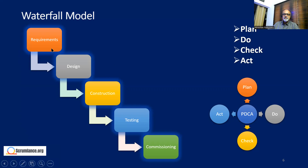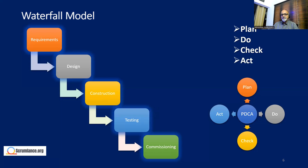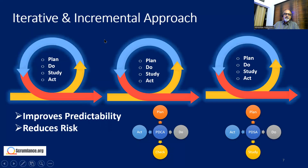A key problem with waterfall is the cost of fixing defects at different phases. A requirements defect fixed in the requirements phase costs $1; fixing the same defect in the design phase costs $10; in construction it costs $100; and in the testing phase it costs $1,000. The cost of rework grows exponentially, meaning incorporating changes late in a waterfall project is very expensive.